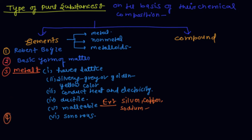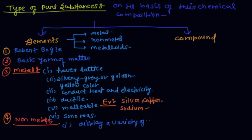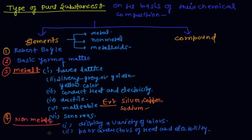The other type of element is non-metal. Non-metals also have some properties. First, they display a variety of colors. Second, they are poor conductors of heat and electricity. Third, they do not have luster, they are not malleable, and they are not sonorous.